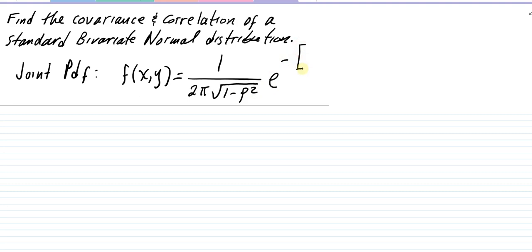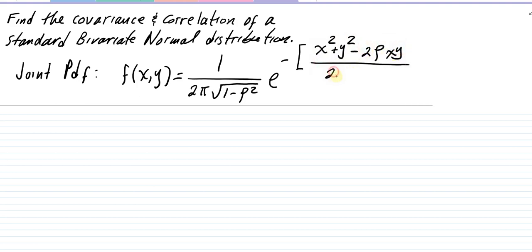The exponent is e to the negative quantity x squared plus y squared minus two ρxy, all divided by two times one minus ρ squared, where ρ is bounded between negative one and one. So that's the PDF, and again we want to find the covariance and correlation.